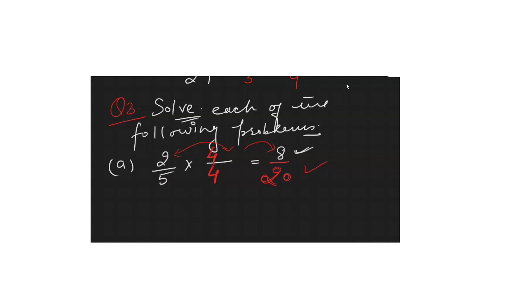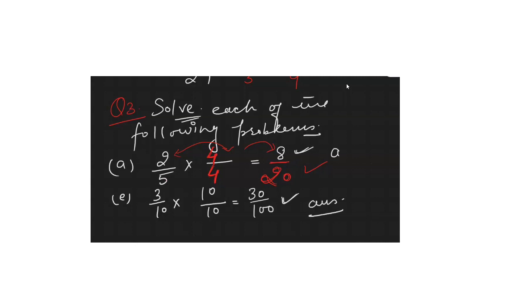Next question, part e: find an equivalent fraction of 3/10 where the numerator should be 30. You know that 30 comes in the 3 times table at position 10, so multiply by 10. 3×10 = 30 and 10×10 = 100. So the answer is 30/100.